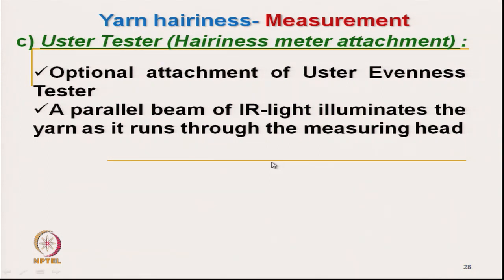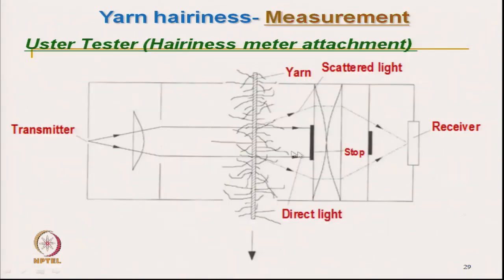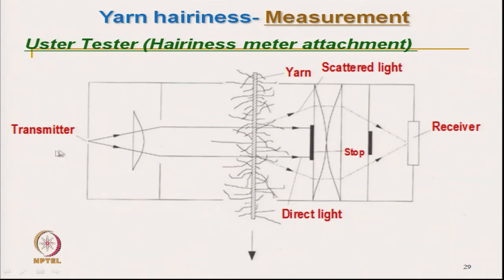A parallel beam of infrared light is illuminated. If there is no yarn present, this parallel light will be blocked by the stop arrangement and the light will not reach. Even if yarn is present but has no hairs — like a filament yarn — there would not be any light scattering due to hair, so light will either be blocked by the yarn or blocked by the stop.